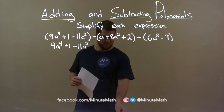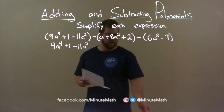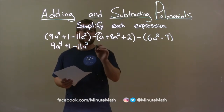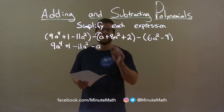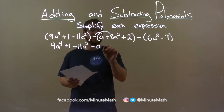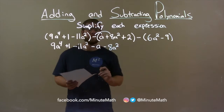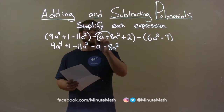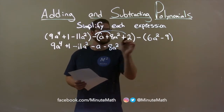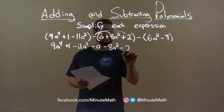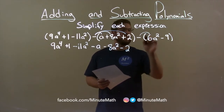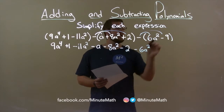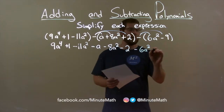Halfway through, I don't have any more orange markers, so let's go with blue. Distribute the minus sign across here: minus an a. And then the minus sign goes across here with minus 8a squared. The minus sign goes to the last part — minus times 2 is a minus 2. Another minus sign: minus times 6a squared is a minus 6a squared.